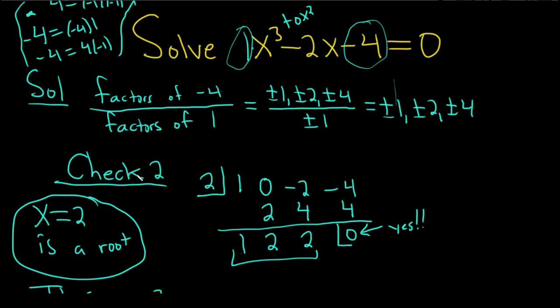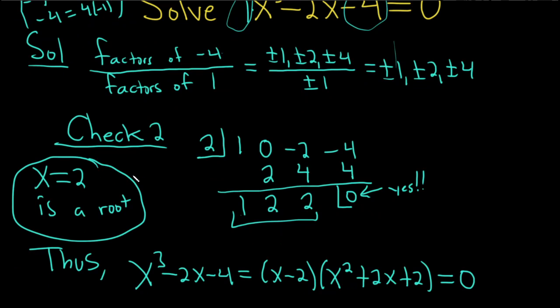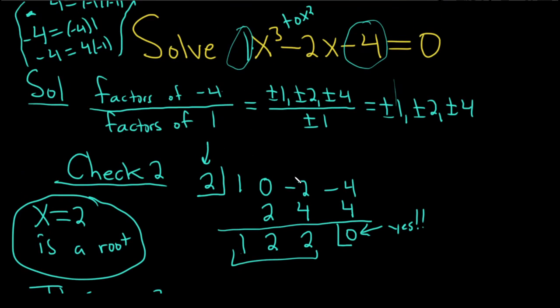I mentally checked 1 and negative 1, and it just didn't feel right. So I started with 2. I got super lucky. And 2 works. So what you do is you put the 2 here. Then you write down the coefficients of the polynomial. So 1, 0, negative 2, negative 4. So the 0, it's really there, because 0x squared is 0. So you do have to include it.